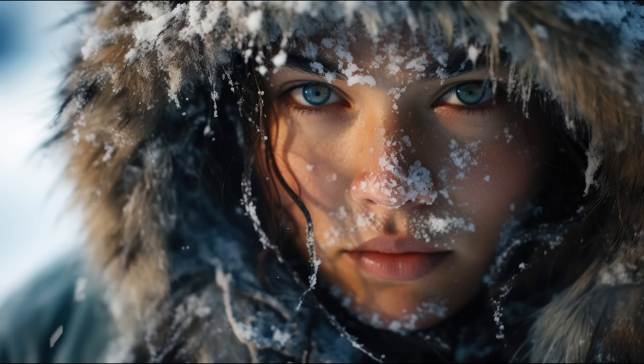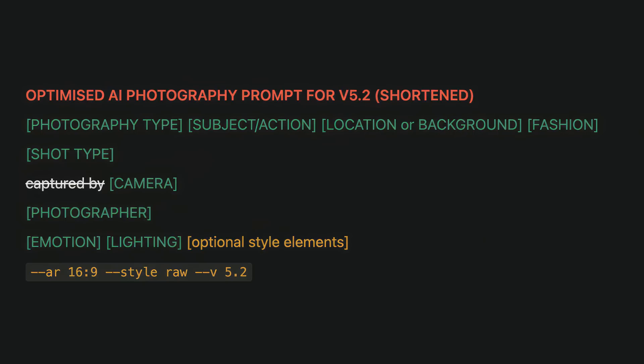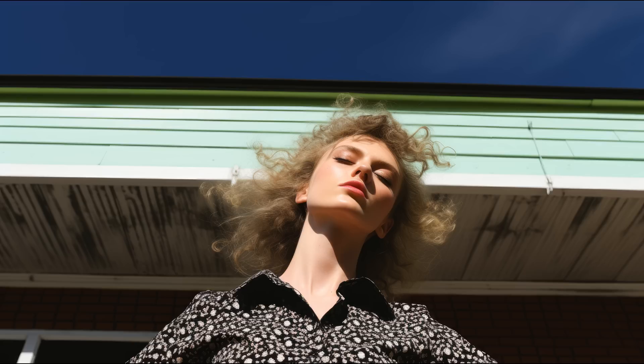Here is an example image using my cinematic prompt structure. When it comes to AI photography prompts, I made a few simple changes. Similar to cinematic images, I recommend placing subject, location, and fashion very early in the prompt. The word 'cinematic' is replaced with your choice of photography type — which can be anything from portrait to landscape, wildlife, macro, etc. — and I removed 'captured by' from my prompt structure. For the remaining elements, you can decide how early to mention them based on your personal preferences.